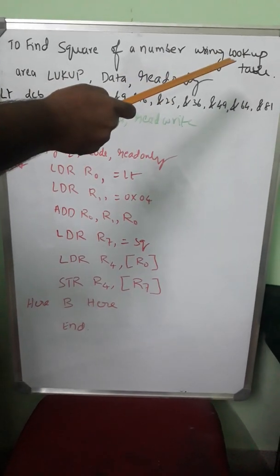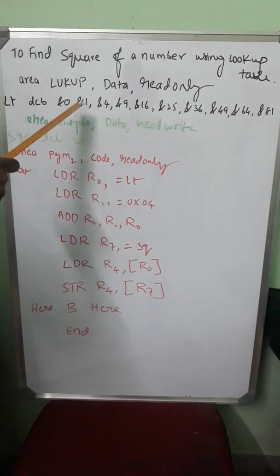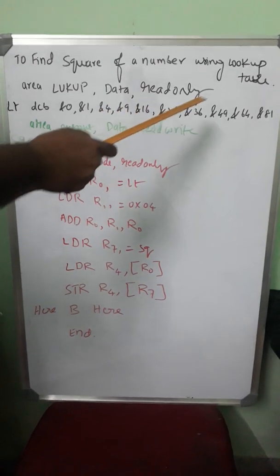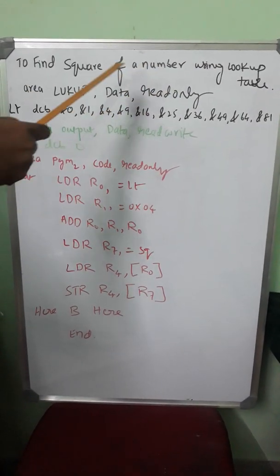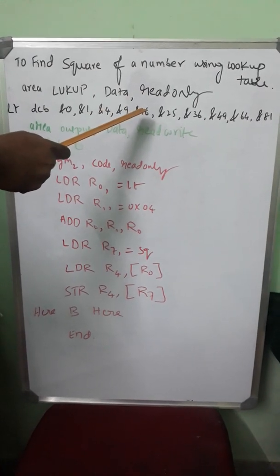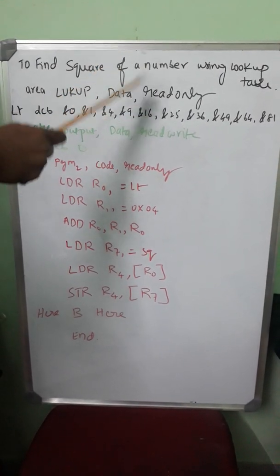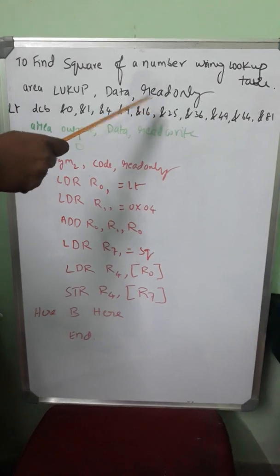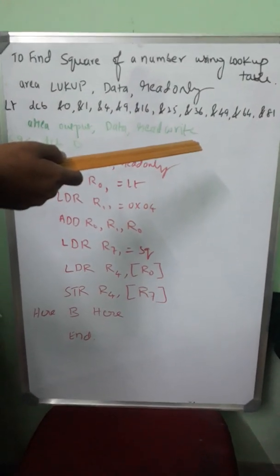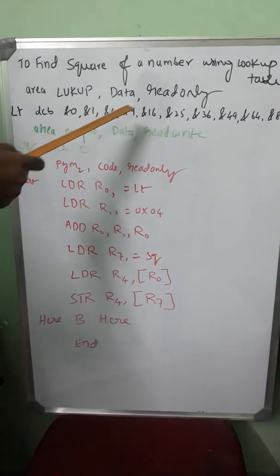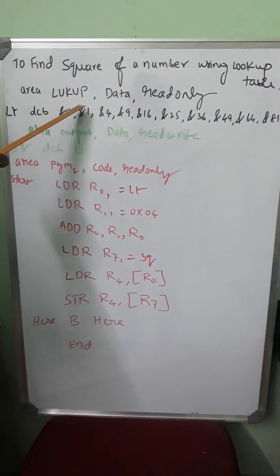A lookup table is a table where the equivalents are already stored, and using the inputs you arrive at the address of the location where the particular equivalent is stored. For example, if you want to find the square of 4...